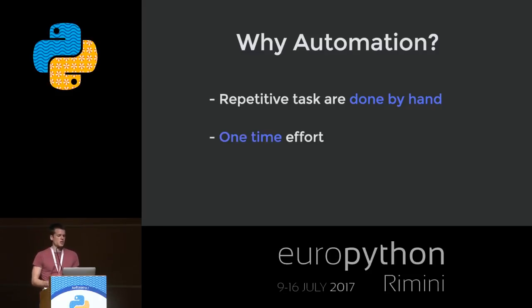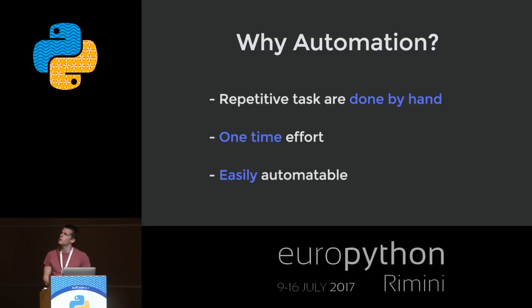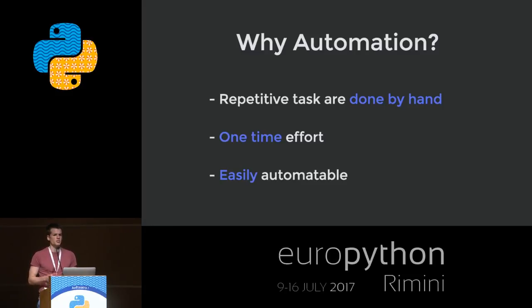Especially since automating stuff is most of the time a one-time effort. You don't have to do it every time — you might have to make some slight adjustments, but the big part is done and it will save you time the more often you have to do it. I just recently had to send an email to every single contact on a CSV file. I could have done it by hand, but instead I just wrote a script to go through the CSV file and send out an email, so I had time for more important stuff.